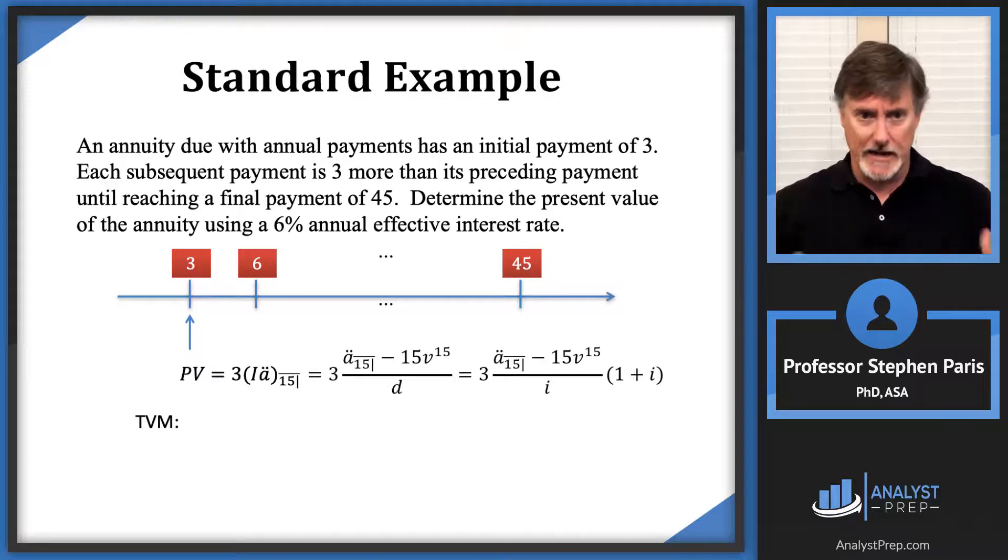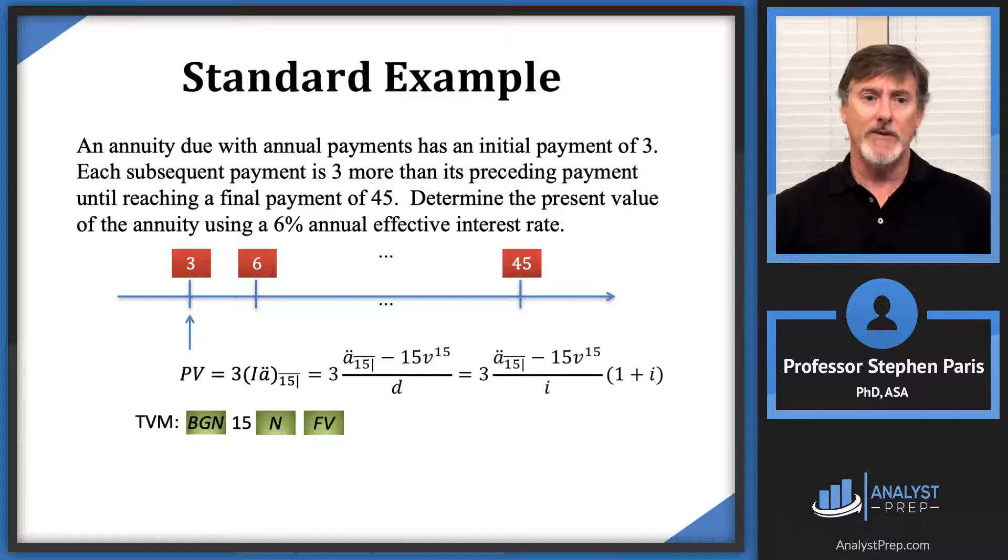This is technically exactly what I would do then. I've got an a double dot value that I'm calculating, so I should be in begin mode. I'm going to make sure I'm in begin mode, and then I'm going to type in 15 and I'm going to save that for both the n and the future value, so I type in 15 and store it as both n and future value. The interest rate is 6, so I type 6 and then hit the i slash y button. I'm putting in a negative 1 as the payment, so I type 1, hit the plus minus, and then the payment.